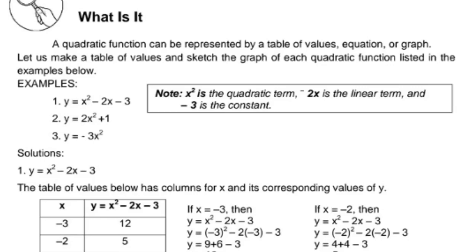Example 1: y equals x squared minus 2x minus 3. Note that x squared is the quadratic term, negative 2x is the linear term, and negative 3 is the constant term. Example 2: y equals 2x squared plus 1. Example 3: y equals negative 3x squared.